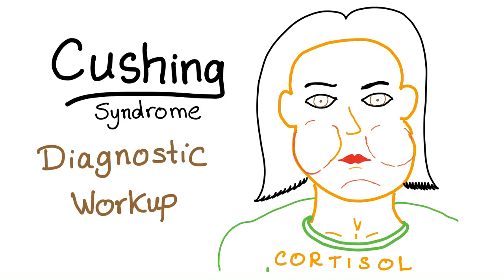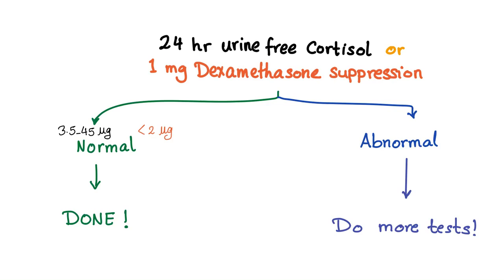Hey doctors, or future doctors — how to diagnose a case of Cushing syndrome. Cushing syndrome diagnostic workup. This lady has moon faces, buffalo hump, and other symptoms of Cushing syndrome. The diagnostic workup of Cushing syndrome can be difficult to understand and to remember, so I'll explain it in four steps.